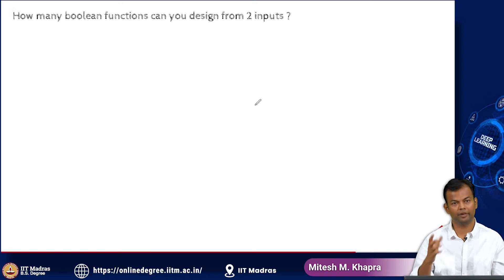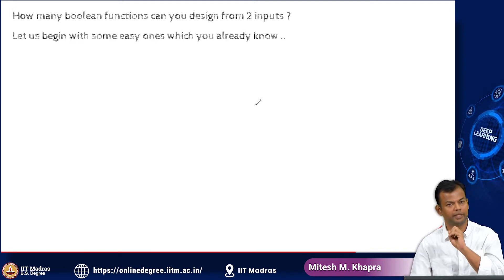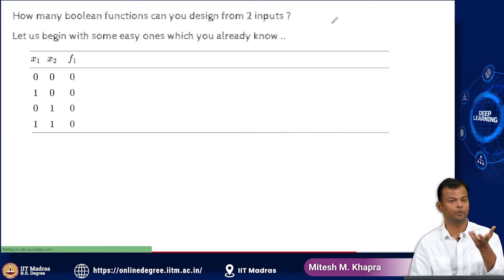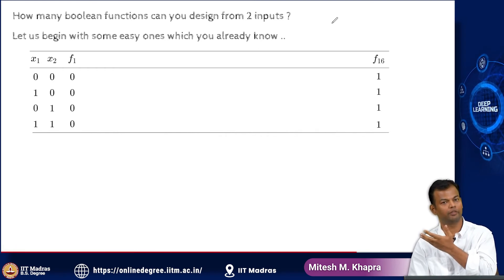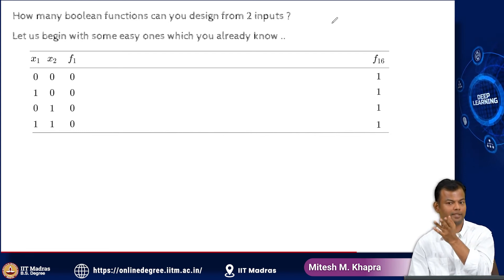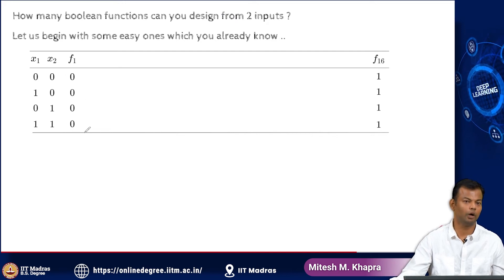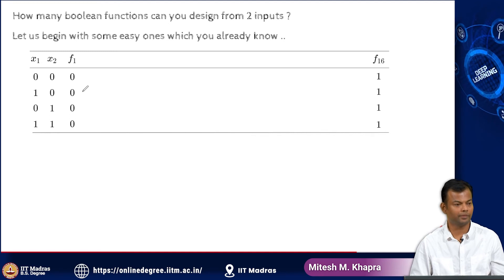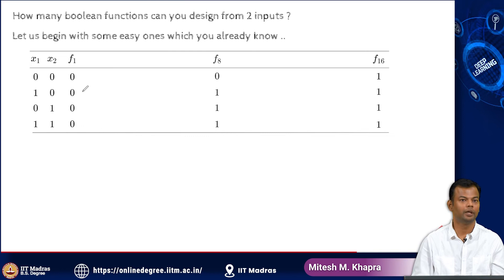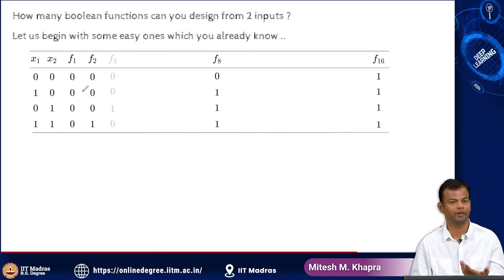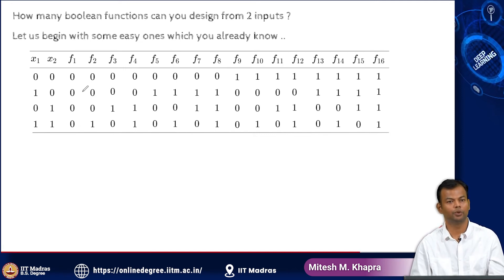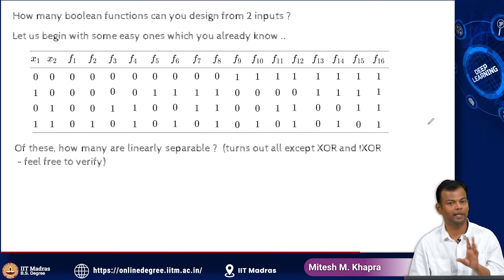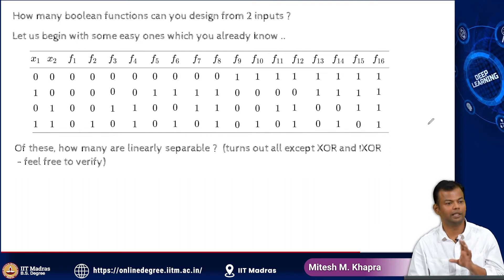Before we see that, let us start with this question: how many Boolean functions can you design from two inputs? Starting with some easy ones — the always-off function and the always-on function — you can see from the numbering that there are going to be 16 such functions possible. You have 4 outputs and each output could take 0 or 1 value, so you have 2 raised to 4, which is 16, which is actually 2 raised to 2 raised to 2. This includes OR, AND, and other functions. Of these 16, how many are linearly separable? It turns out all except XOR and NOT-XOR are linearly separable — so 2 out of 16 are not linearly separable.